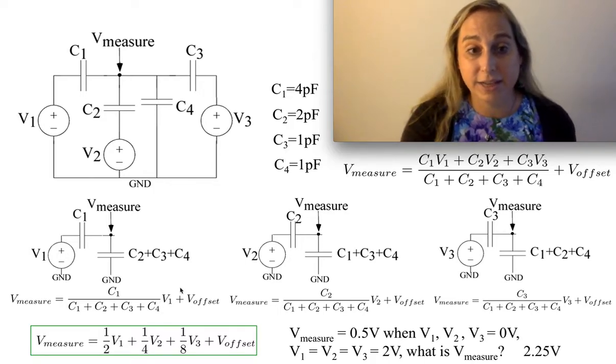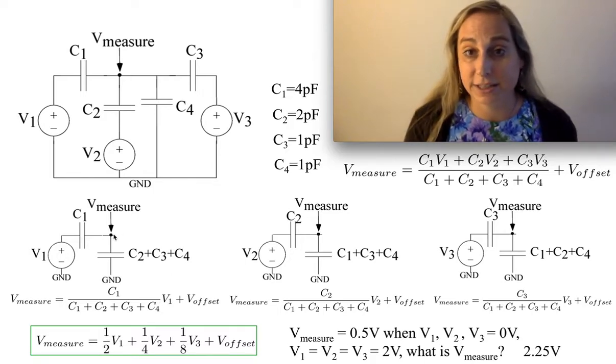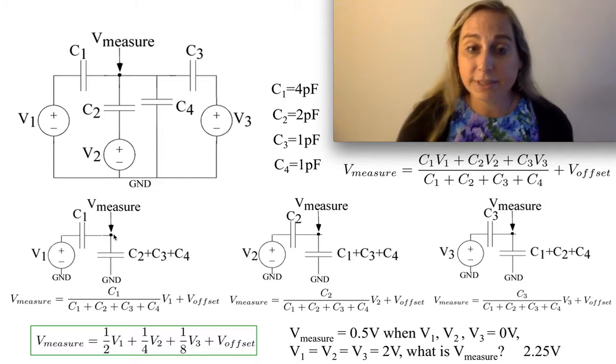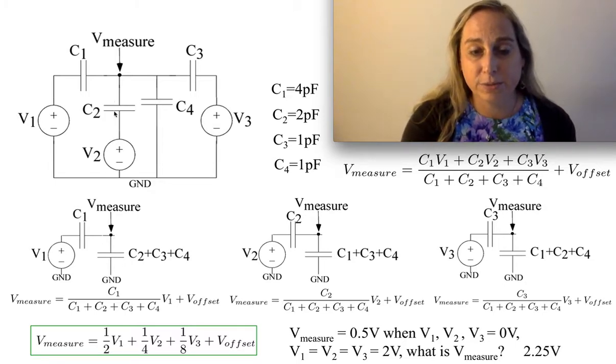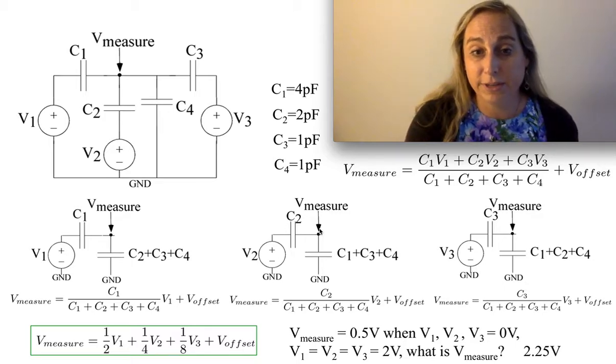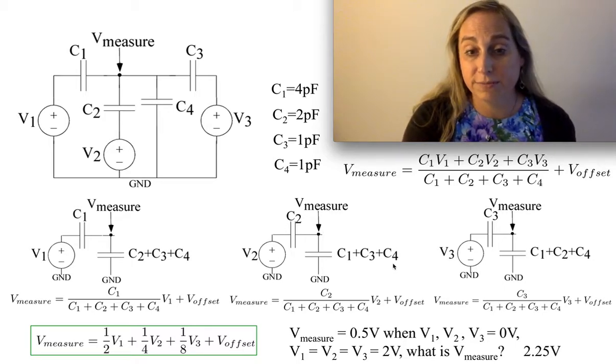And then there's an offset because we don't know how the charge is going to play in that situation. Similarly, I could look at it through C2, and I would get a very similar structure here, C2 going into it, and then C1, C3, C4.